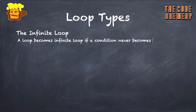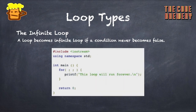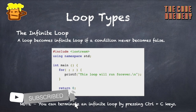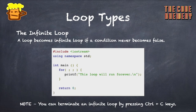The last section is the infinite loop. Sometimes a condition is never met, or there is no increment or decrement, and the loop runs again and again — it becomes an infinite loop. An infinite loop occurs when the condition never becomes false. In the example, no condition is being met and no increment or decrement is happening, so the loop goes on forever. Note: you can terminate an infinite loop by pressing Ctrl+C.